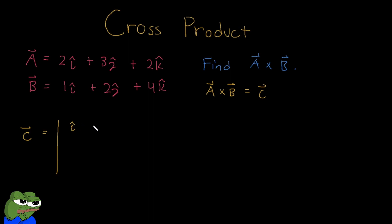So we start by writing I, J, and K on top. And then for our missing row here, which is our second row, let's put in the components of our first vector. So let's do two, because that corresponds to I, and three, because that corresponds to J, and two. And then for our last row, let's put in the components of our second vector, which is B. So let's put in one, two, and four.